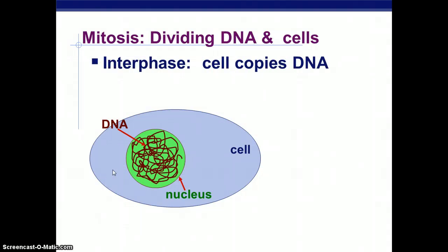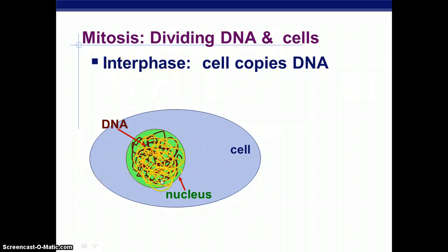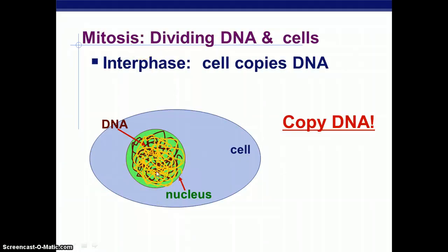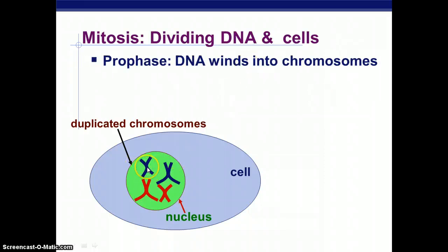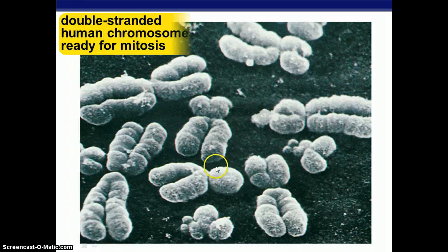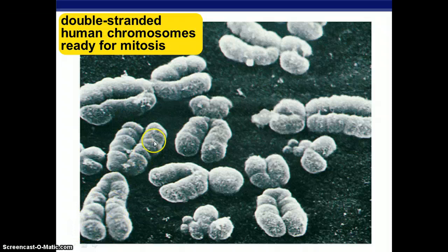Back to the cell cycle and its phases. You start with interphase, where the cell copies DNA in S phase of interphase. Then you can go on to prophase. Prophase is the first actual phase of mitosis — this is where you go from a tangled mass of DNA to very nicely wound DNA, and this is where they start to be called chromosomes. This is also where we can start seeing them under a microscope. Here we have double-stranded DNA — these are actually human chromosomes, with half of a chromosome on each side.